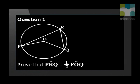In the diagram, O is the center of the circle. P, Q, and R are points on the circumference of the circle. Prove that angle PRQ is equal to half of angle POQ.